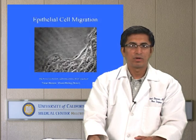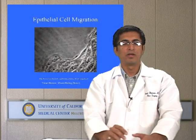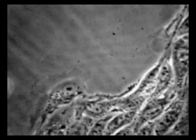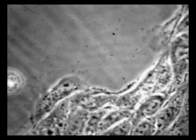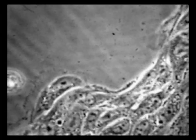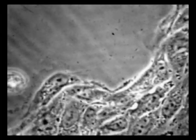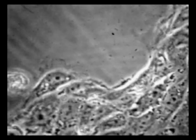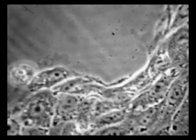On the next slide, there is a video of epithelial cells migrating in a petri dish. This video was filmed over 48 hours and is shown here in a couple of seconds. This is exactly how epithelial cells migrate over granulation tissue and fill the gap.